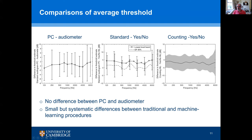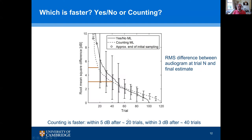The graph shows the root mean square difference between the estimate after a given number of trials relative to the final estimate at the end of the run. The counting method gets within 5 dB of the final estimate after 20 trials and within 3 dB after 40 trials — quicker than the yes/no method, which took about 30 trials to get within 5 dB and about 50 trials to get within 3 dB. So we can get high accuracy and good repeatability with the counting method after only about 20 to 40 trials.